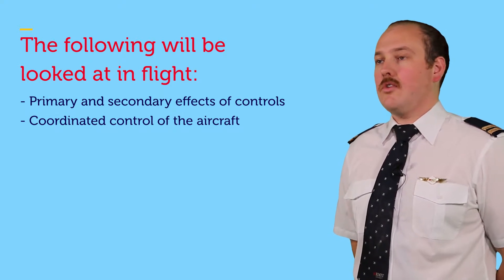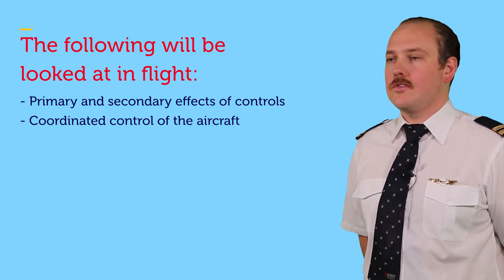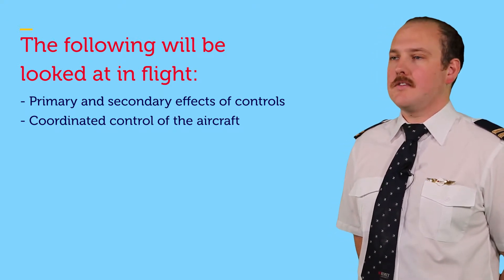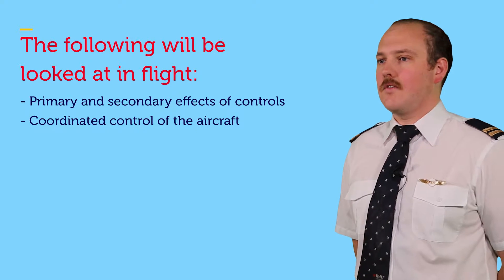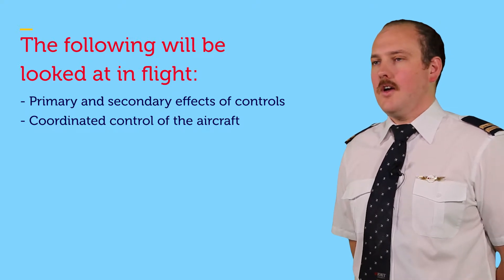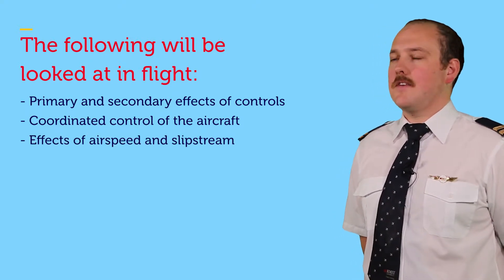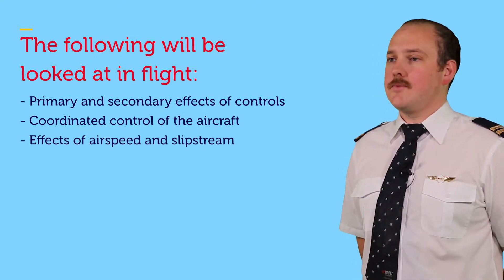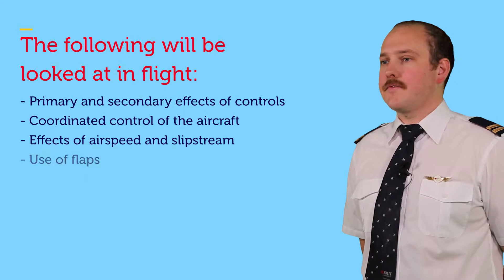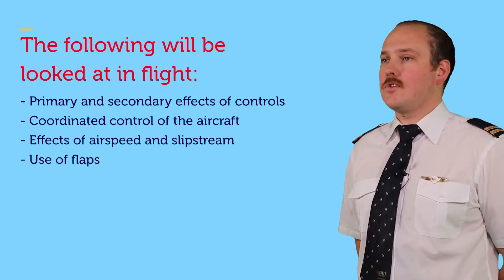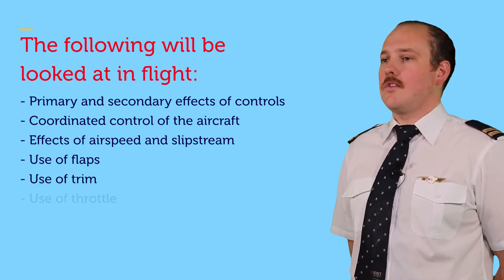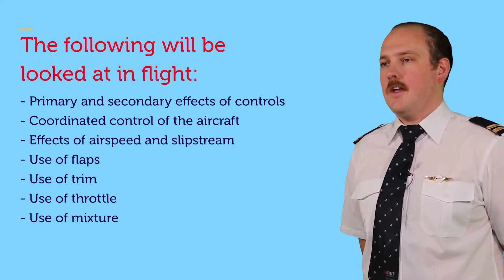When we're rolling, we'll look at the use of rudder to counter the effect of yaw. We're also going to look at the effects of airspeed and slipstream, the use of flap, the use of trim, the throttle, and the mixture control.